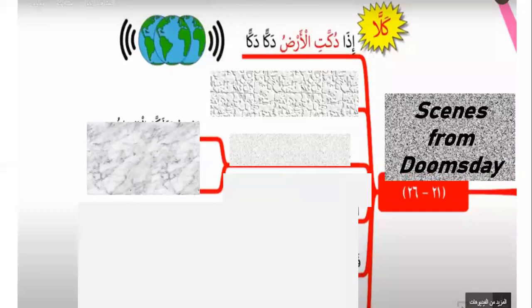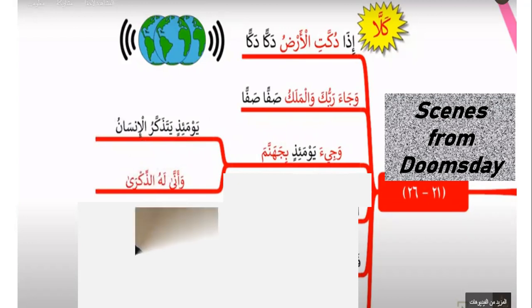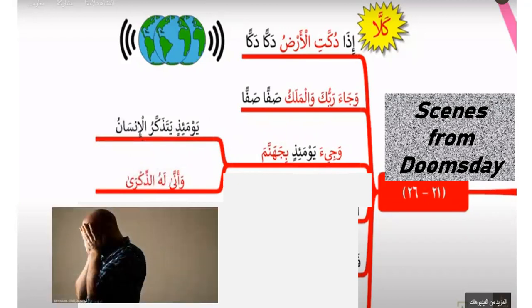Surah Al-Fajr: إذا دكت الأرض دكا دكا. وجاء ربك والملك صفا صفا. وجاء يومئذ بجهنم. يومئذ يتذكر الإنسان وأنى له الذكرى.